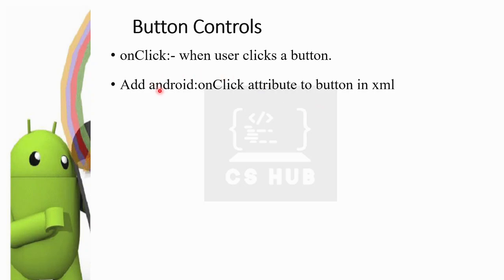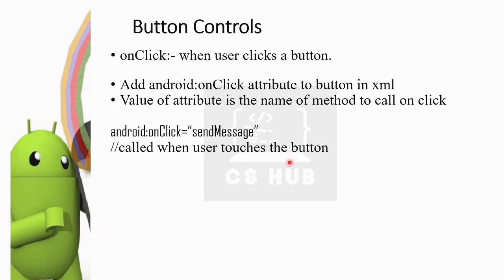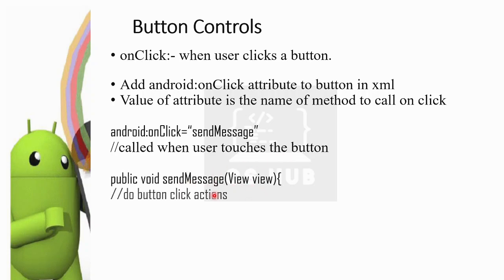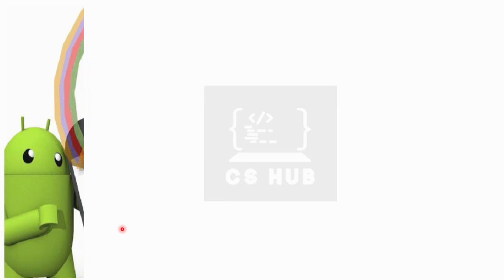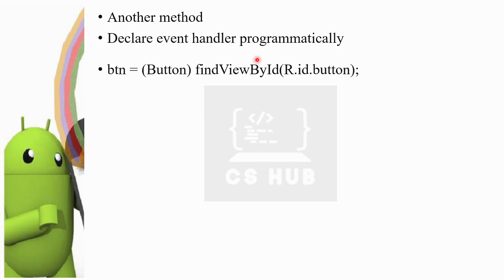You can use the attribute in XML. Click the button and define the onClick function. Then we define the event handler. You can also declare the event handler programmatically.